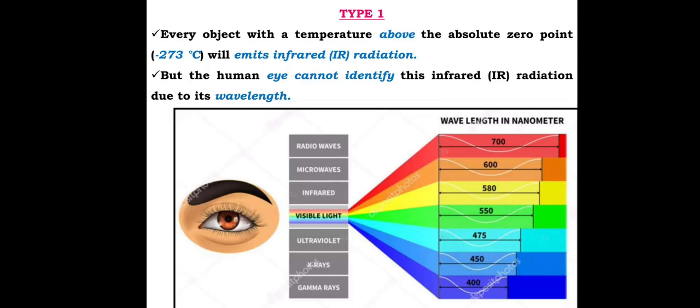Every object with a temperature above absolute zero will emit infrared radiation, but the human eye cannot identify this infrared radiation due to its wavelength. The picture shows the different wavelengths in nanometers.